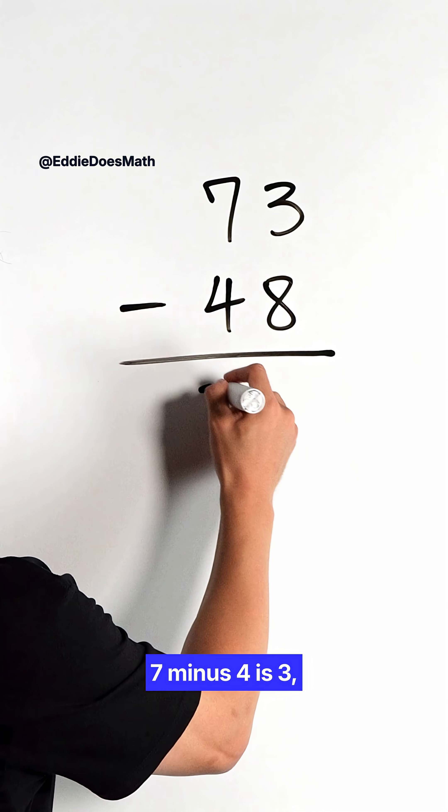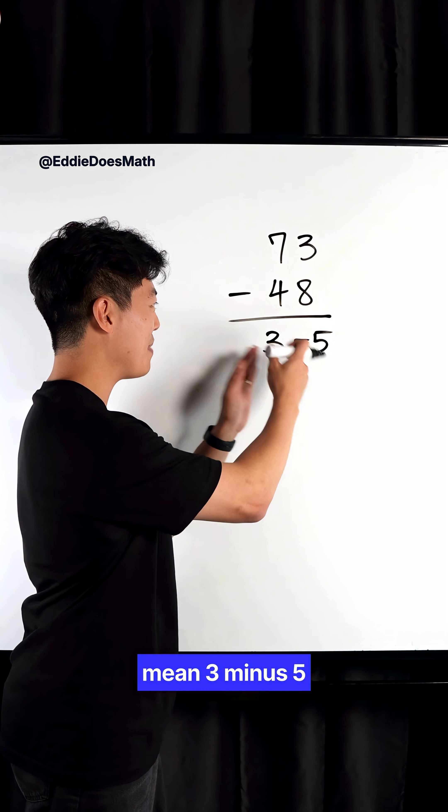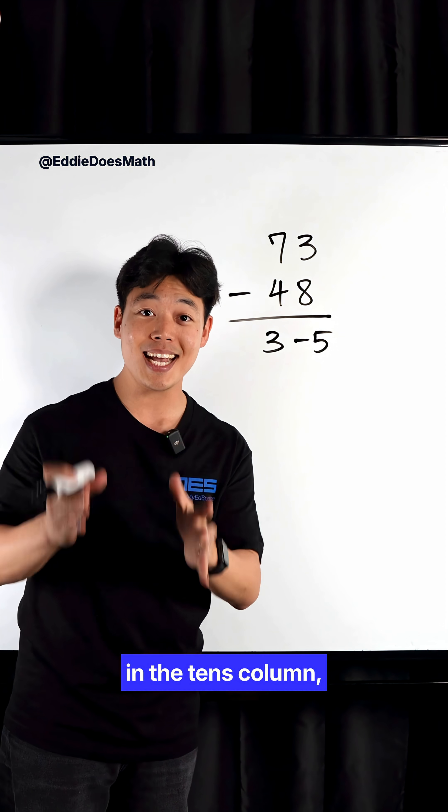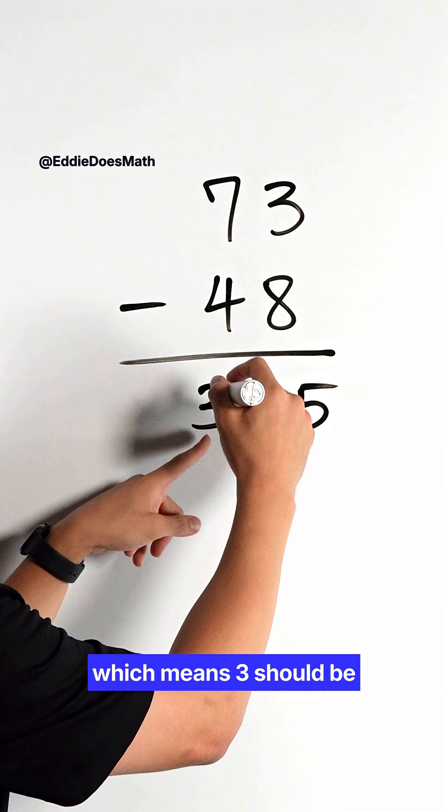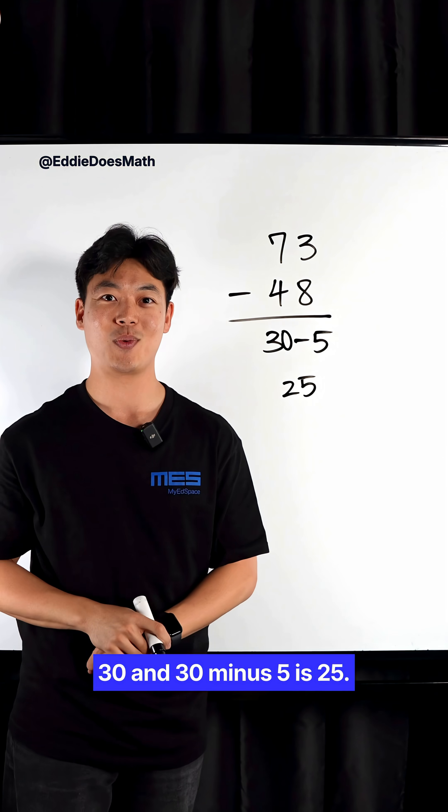7 minus 4 is 3, 3 minus 8 is negative 5. But this doesn't mean 3 minus 5. 3, just like 7 and 4, are in the tens column, which means 3 should be 30, and 30 minus 5 is 25.